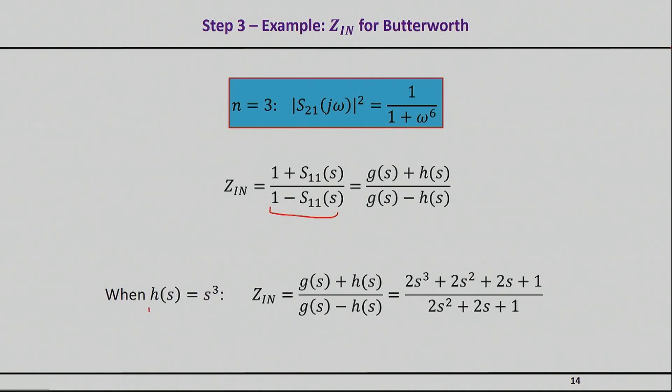So if you choose h(s) to be s to the cube, then your input impedance will basically be this.